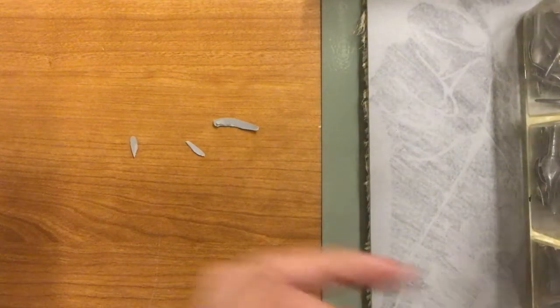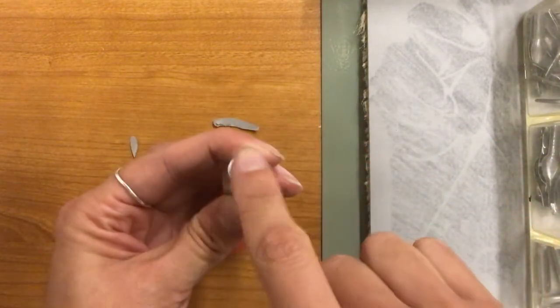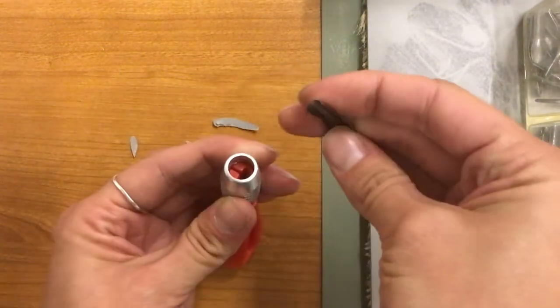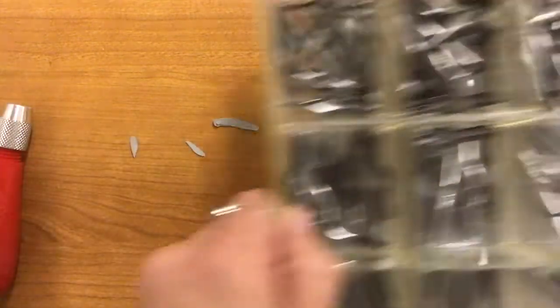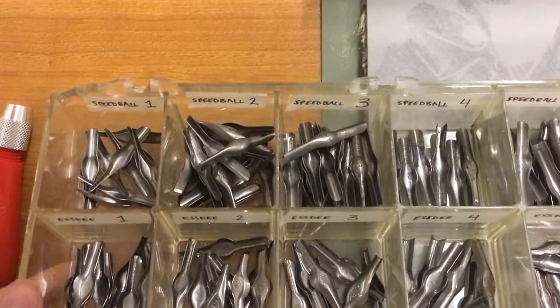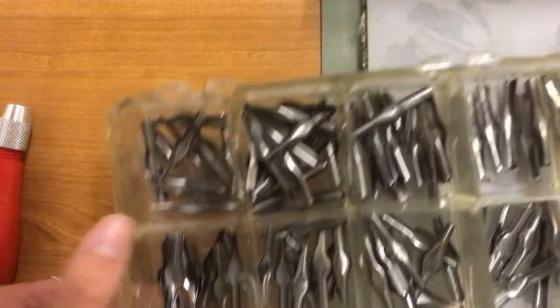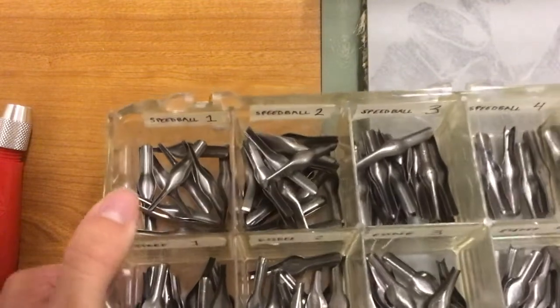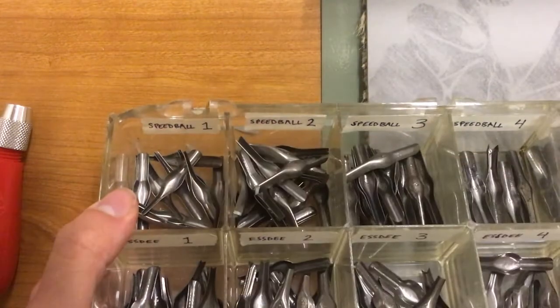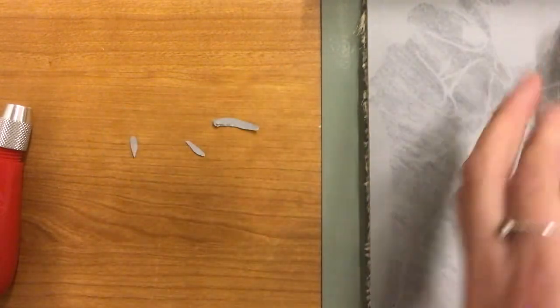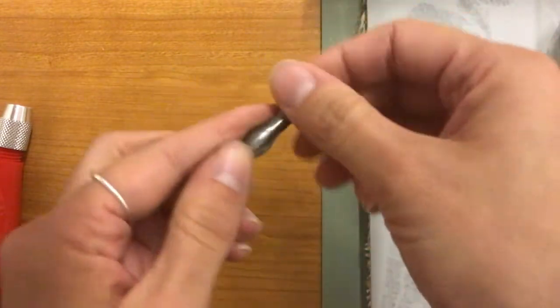So the carving tools that we're using have a handle and then you can change out the type of carving tip that you put in there. I've got a tray of a bunch of different options and they're all labeled. Make sure that we always put them back in the same spot after we use them. Each tip is actually labeled so I have that label on the box.